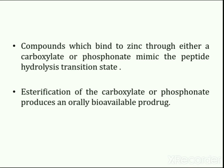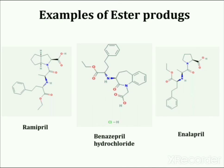Carboxylate and phosphonate groups can easily undergo hydrolysis via the enzymatic catalysis of esterases and phosphatases that are present in many places in the body including liver, blood, and other tissues, or via oxidative cleavage catalyzed by cytochrome P450 enzymes. A number of angiotensin converting enzyme inhibitors which are presently marketed as ester prodrugs include enalapril, ramipril, benazepril, and fosinopril, all of which are intended for the treatment of hypertension.